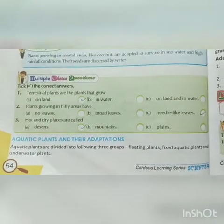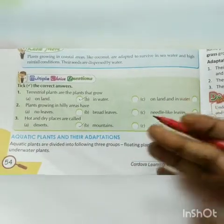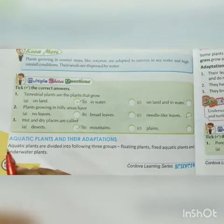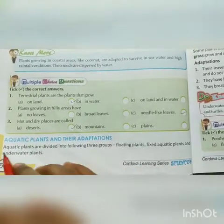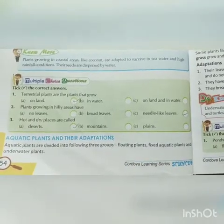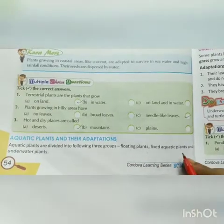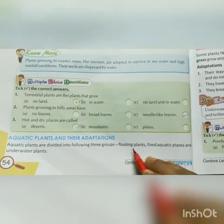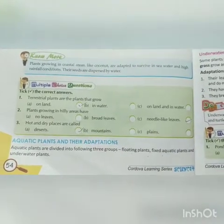Aquatic plants and their adaptation. Aquatic plants कौन होते हैं? जो पानी में survive करते हैं। Aquatic plants are divided into three groups: first, floating plants; next, fixed aquatic plants; and third, underwater plants। यह तीन types aquatic plants के kinds हैं।